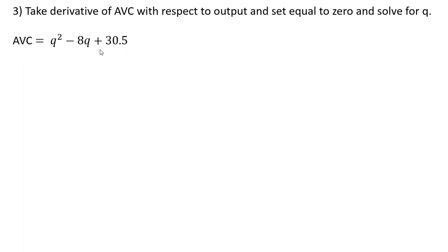So here's average variable cost again. And taking the derivative of that, the derivative of Q squared is 2Q, the derivative of minus 8Q is minus 8, the derivative of 30.5 is zero, and then we set this result equal to zero and solve for Q. And we get Q equals 4.